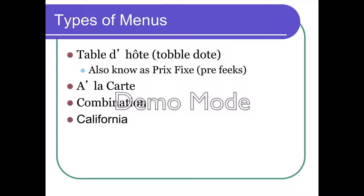Then we have à la carte, where you buy everything independently. Steakhouses are great examples of à la carte, as are fast food restaurants if you take away the meal deals. When you go to a fast food restaurant, you can order a burger, a side like fries, and then a drink, or not order anything. A combination menu has more than one type. A California menu is where you have all meals — breakfast, lunch, and dinner — served all day. IHOP is a California menu, as is Waffle House, and now even Sonic.